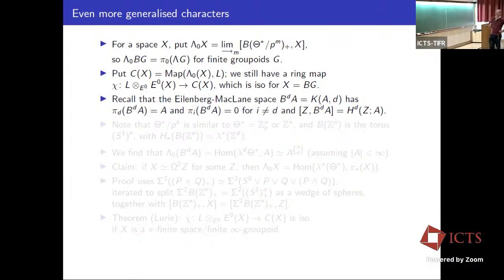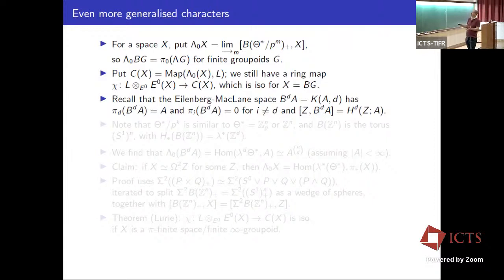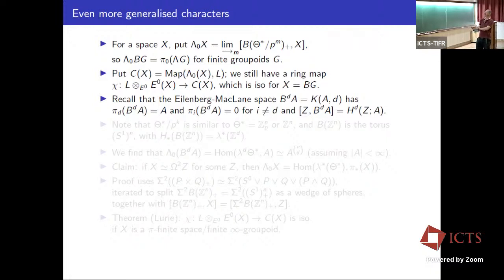To explain when the isomorphism holds more generally, recall Eilenberg-MacLane spaces. I'll write B^d(A) instead of K(A,d) to avoid conflict with Morava K-theory notation. For abelian A, BA is a topological group, so we can take its classifying space again, getting B^2(A) and so on. The space B^d(A) is characterized by π_d(B^d A) = A with all other homotopy groups trivial, and the homotopy classes of maps from Z into B^d(A) give the degree-d cohomology of Z with coefficients in A.